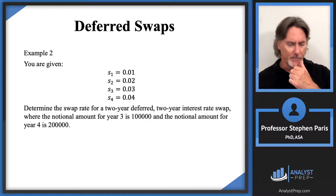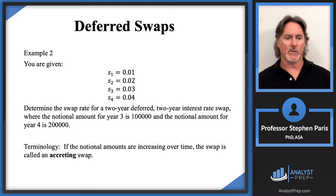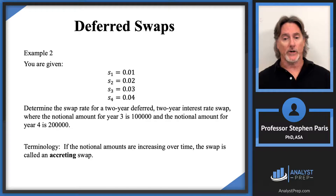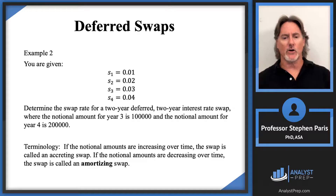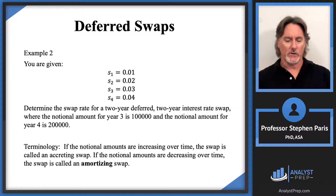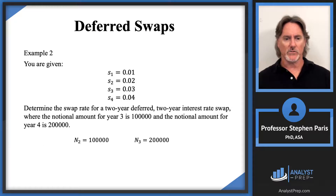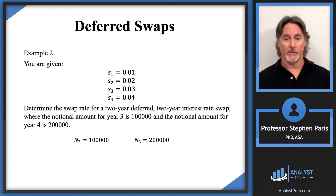Before proceeding to the solution, let me mention some terminology. If notional amounts are increasing over time, the swap is called an accreting swap — accreting means growing. If notional amounts are decreasing over time, the swap is called an amortizing swap — amortizing in the context of paying off a loan, where balances go down. In this case, the notional amount for year three is 100,000 (corresponding to the notional at time two) and for year four is 200,000 (notional at time three), so this is an accreting swap.